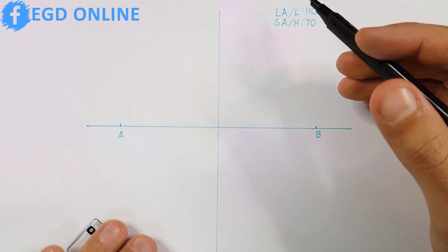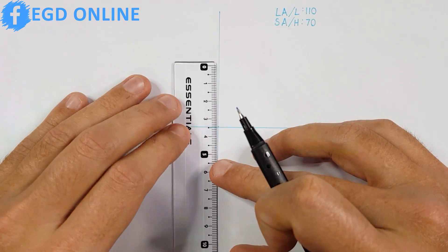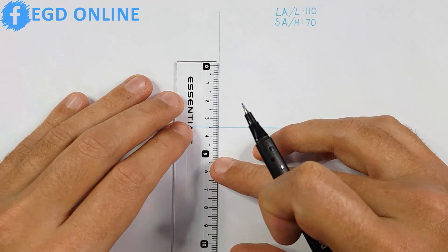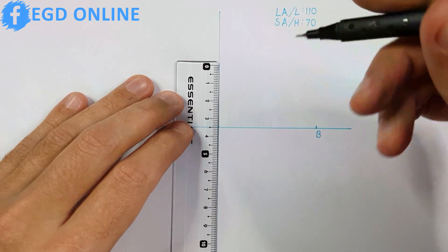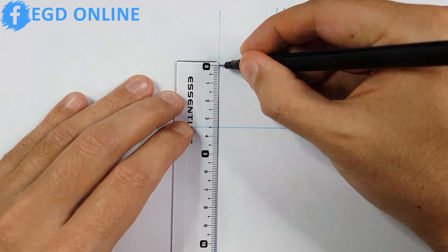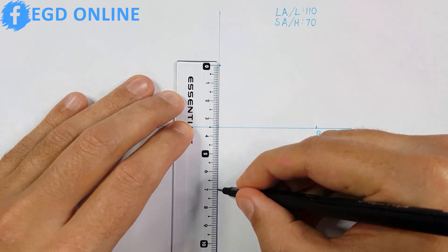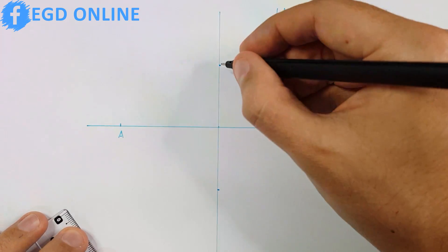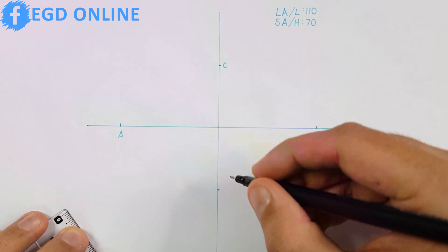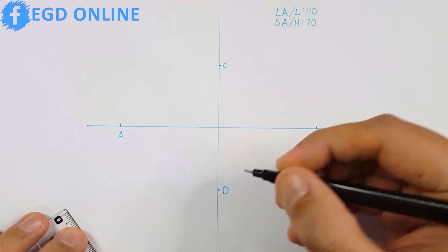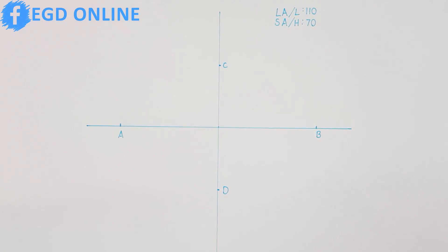Next I will determine my minor axis and for this example I will use 70 millimeters. Note that for minor axis there can also be different terms used like short axis or height. I will label my minor axis as C and D. So let's get started.